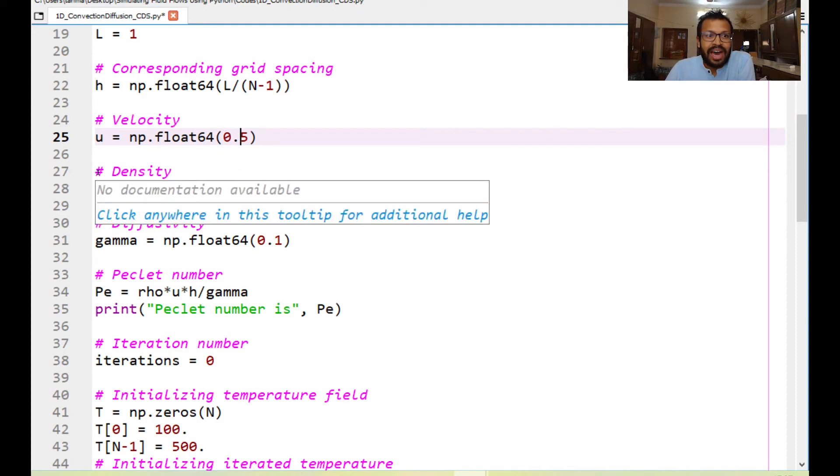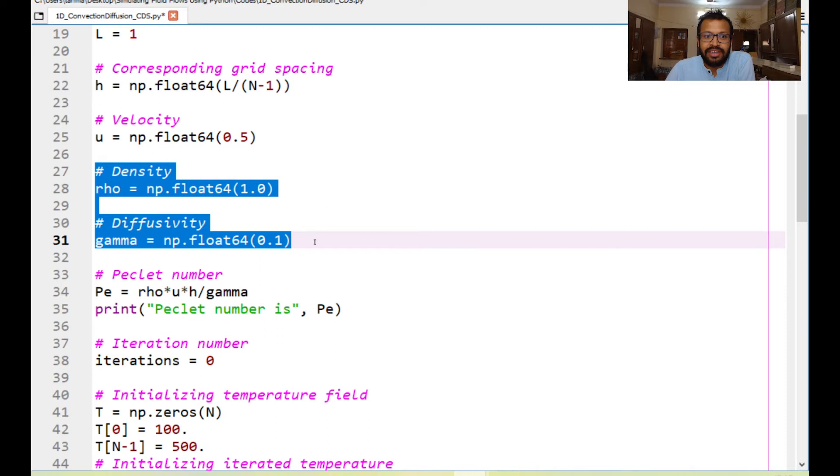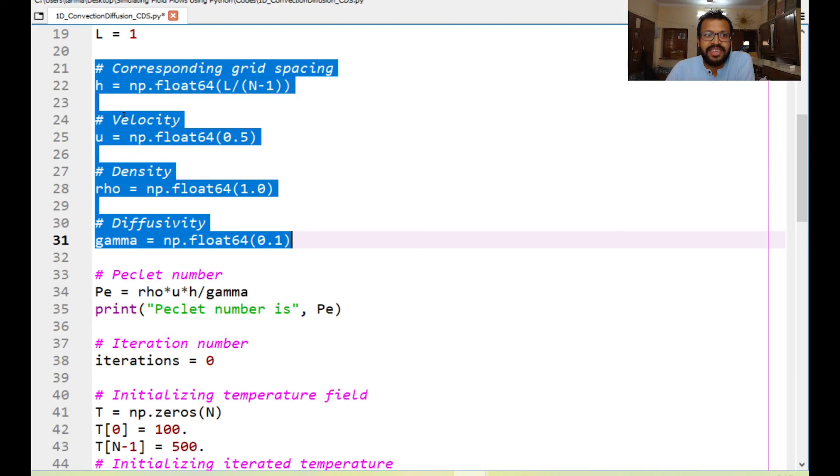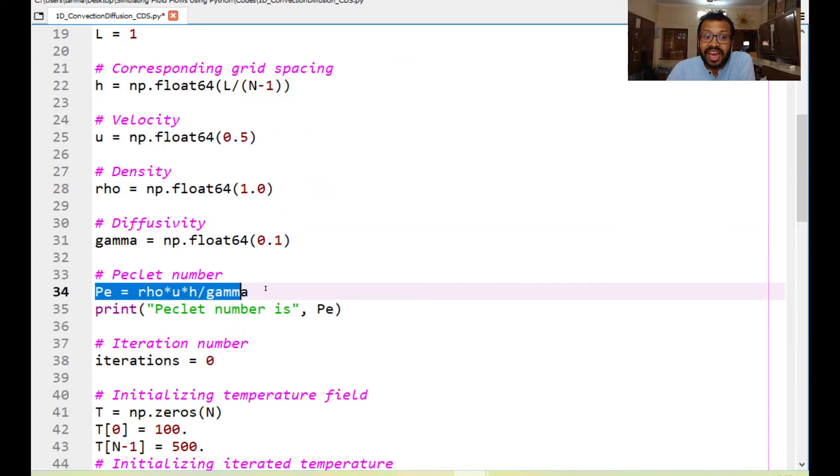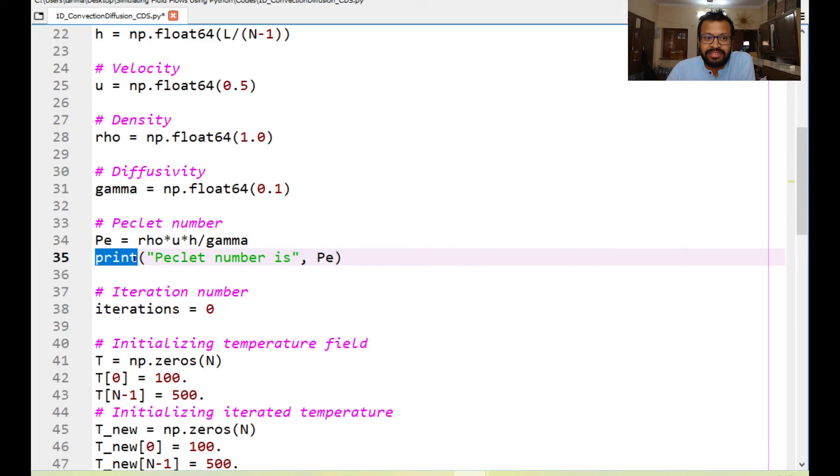After that we define the density and the diffusivity that was given to us through the problem. Now once we have all these parameters, the grid spacing, the velocity, the density, and diffusivity, based on these we can calculate the Peclet number and this is the local or the grid spacing based Peclet number. After this I'm just writing a line that in the print statement prints out piclet number is followed by the value of the Peclet number.